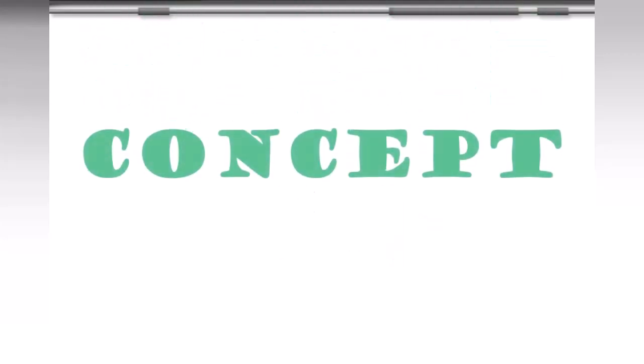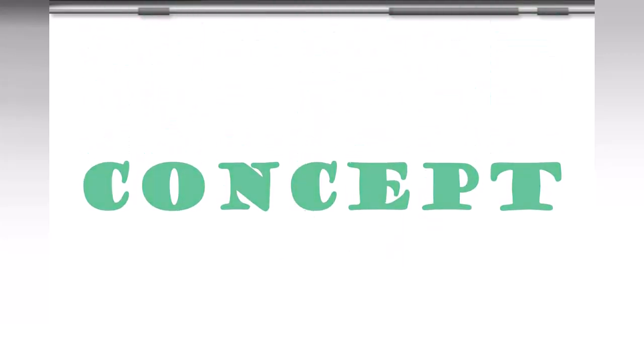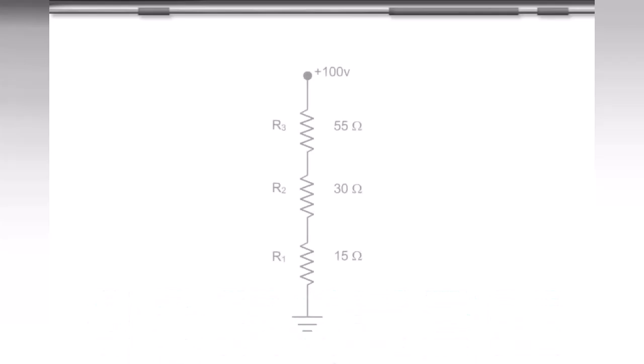A concept that can be applied to series circuits is, whatever the percentage is of an individual resistor to the total resistance, the voltage drop across it is the same percentage of the applied voltage.